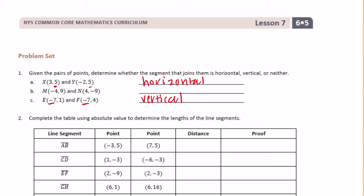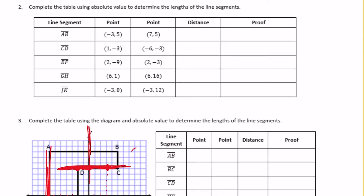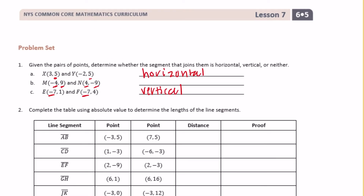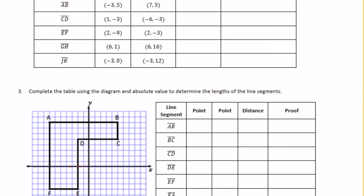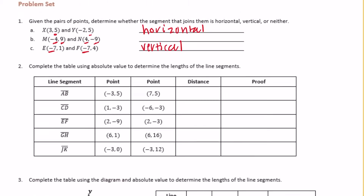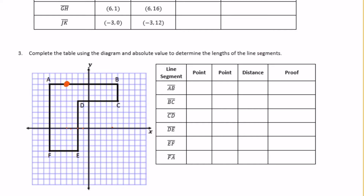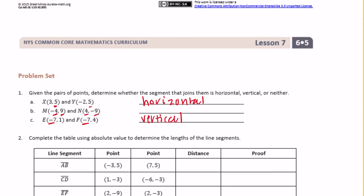Now, for example, we have negative 4, 9 and 4, negative 9. So the x's aren't the same and the y's aren't the same. So if neither of them are the same, we're not going to have a horizontal or vertical line — it's probably going to be a diagonal line. So this would be neither.